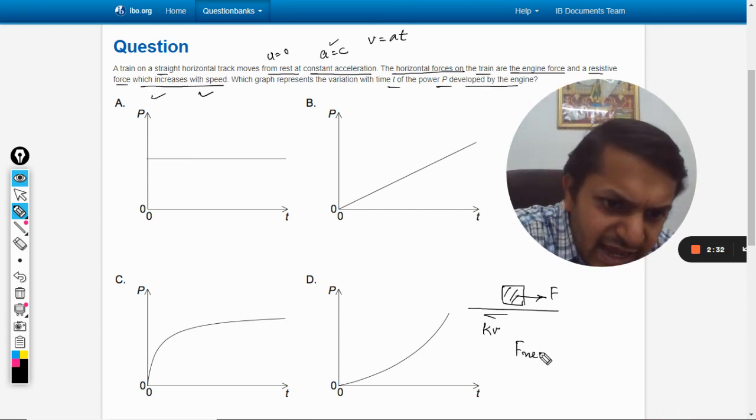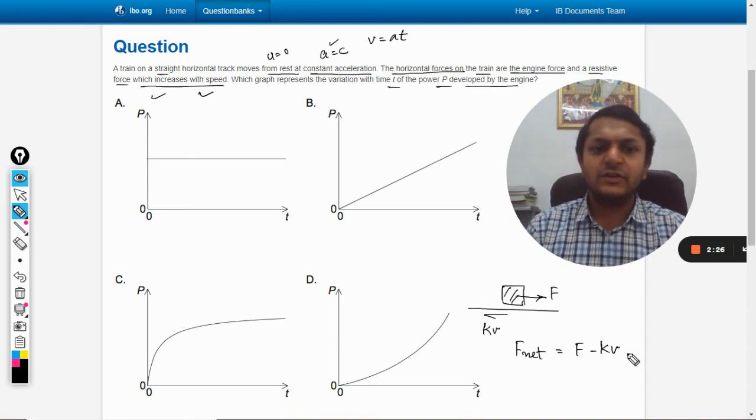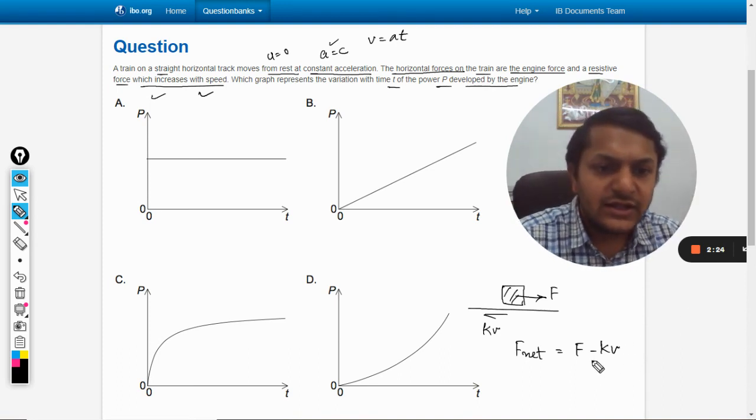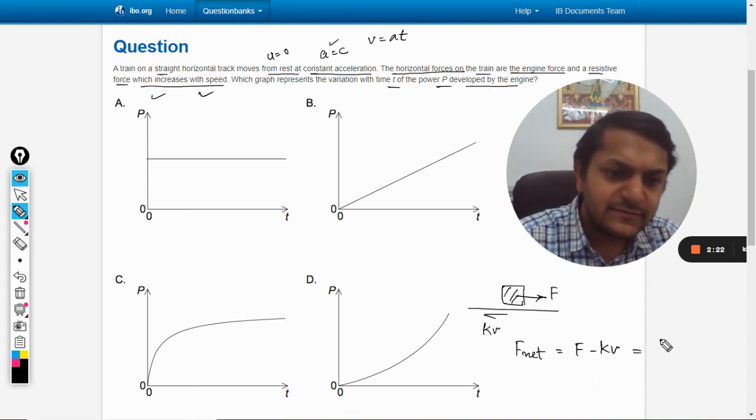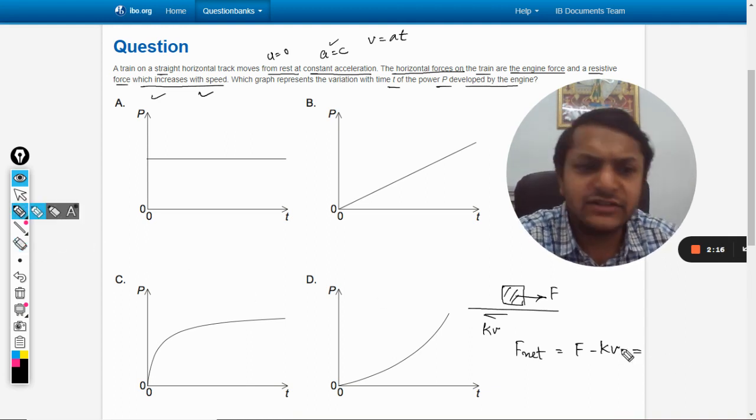So F_net equals F minus kv. This F_net equals m times a, so I can say that it is constant.